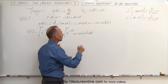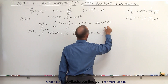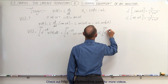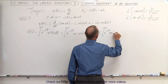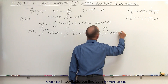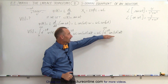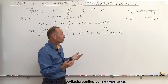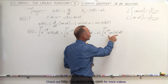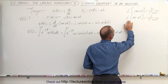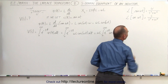This becomes ωL times the integral from zero to infinity of e^(−st) times cos(ωt) dt. In the previous videos we've seen how to find that integral. We just need to remember that the Laplace transform of cos(ωt) is simply equal to S divided by S² plus ω².